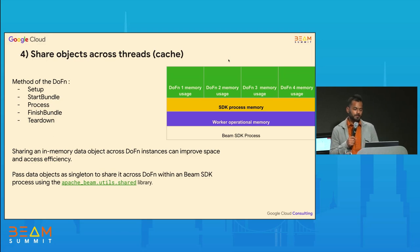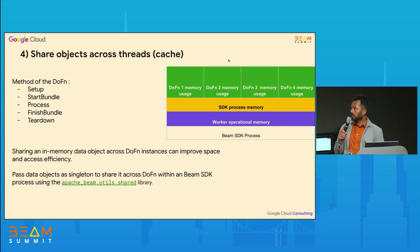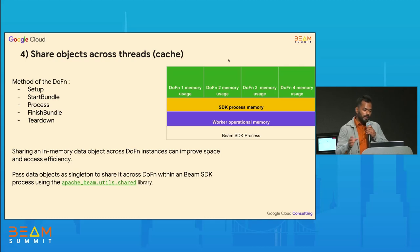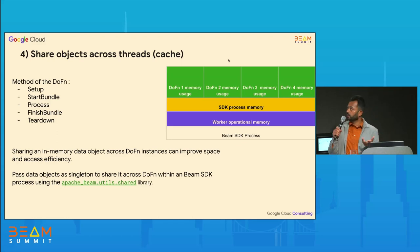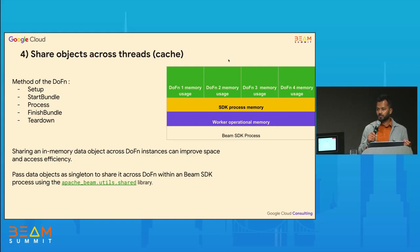The next best practice is using a caching mechanism. For each DoFn, there are multiple methods executed at different stages of the DoFn lifecycle: setup, start bundle, process, finish bundle, and teardown. Anything that you create in any of these methods is going to be created for each DoFn, consuming the green memory, and because there can be hundreds of DoFns, you can have hundreds of copies of those objects or data.